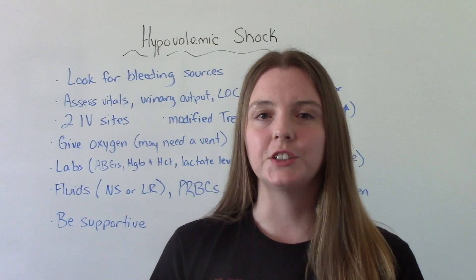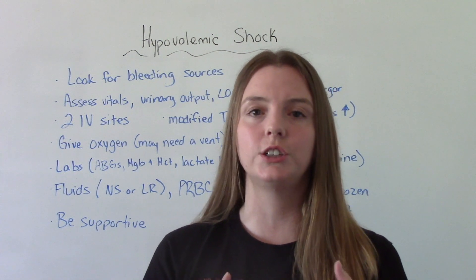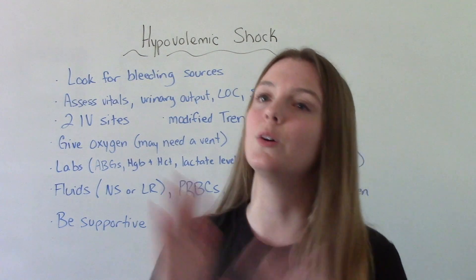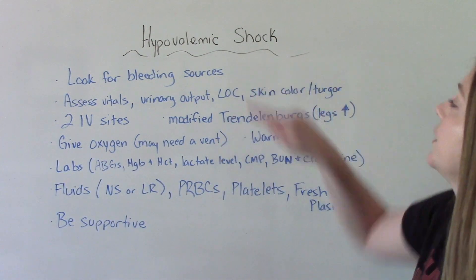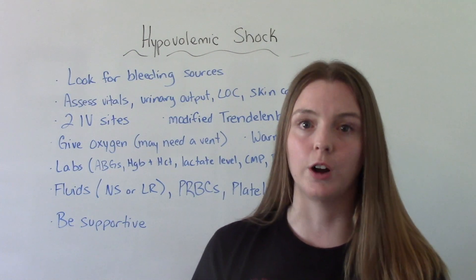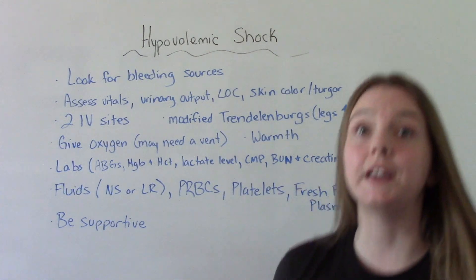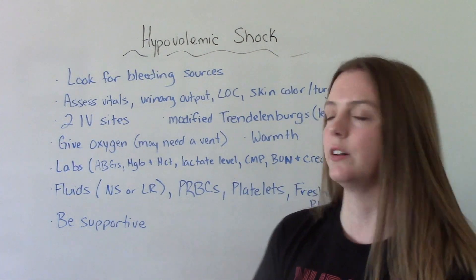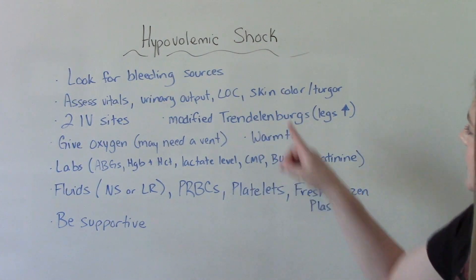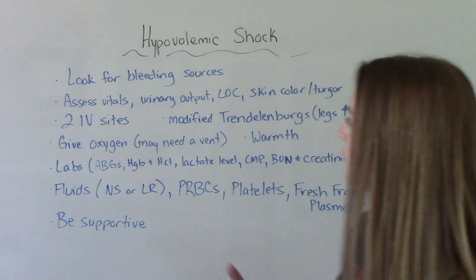When it comes to nursing interventions, it depends on how much percentage of volume has been lost and what the cause was. First, we're going to find out what is causing the bleeding and where it's coming from — look for sources of bleeding. We're going to be frequently assessing vitals, urinary output, level of consciousness, skin color, and turgor to note for changes.